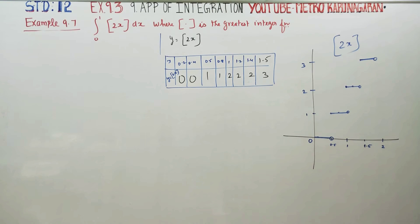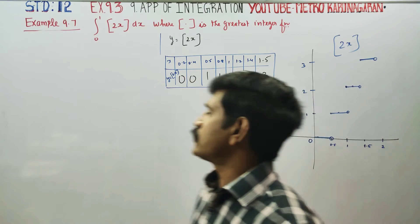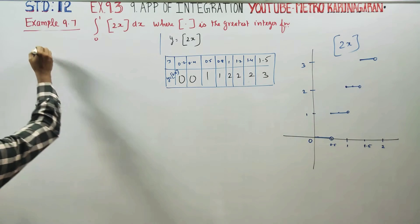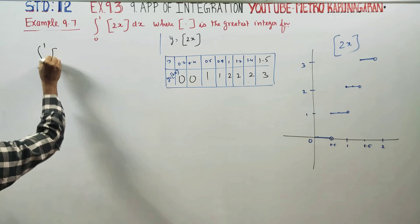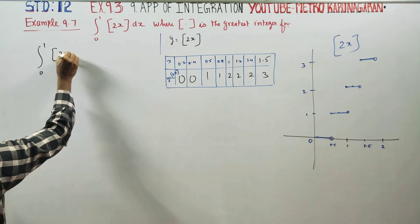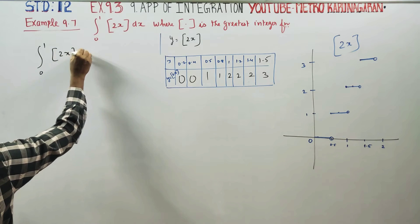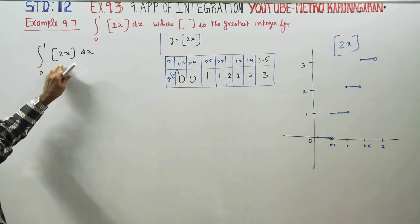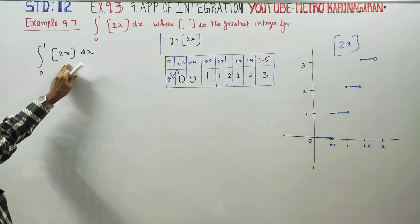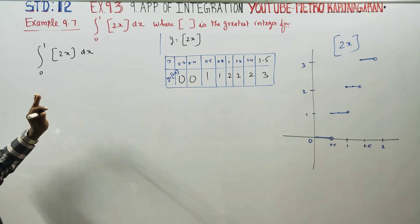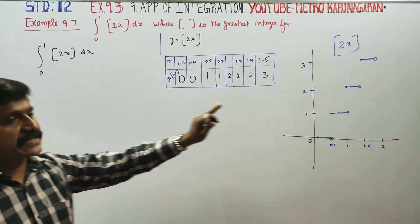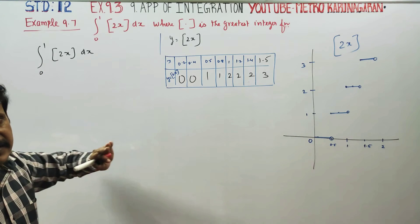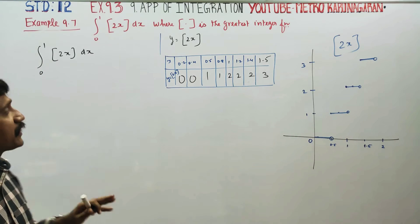Coming back to our integration: I want to integrate from 0 to 1 the greatest integer function of 2x — that is, the integral from 0 to 1 of GIF(2x) dx. There is no direct integration for the greatest integer function. You have to refer to the graph and split the integration. Then only you can integrate.